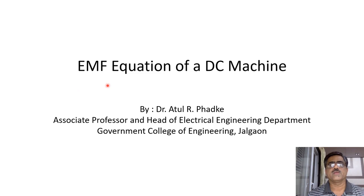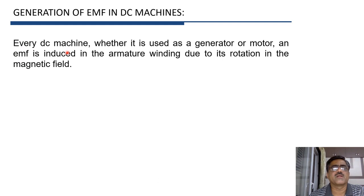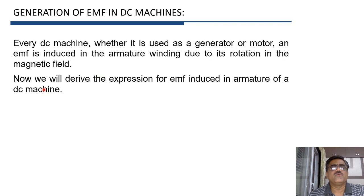In this video, we will derive the equation for EMF induced in a DC machine and we will also solve few numerical problems. The armature is the rotating part and when it rotates, it cuts the flux and therefore an EMF is induced in it. Therefore, in every DC machine, whether it is used as a generator or as a motor, an EMF is always induced in the armature winding. Now we will derive the expression for EMF induced in the armature of a DC machine.